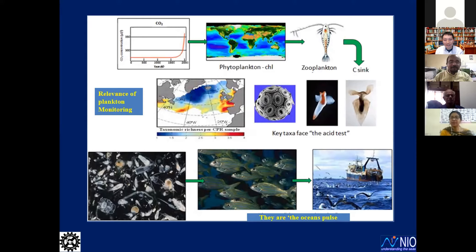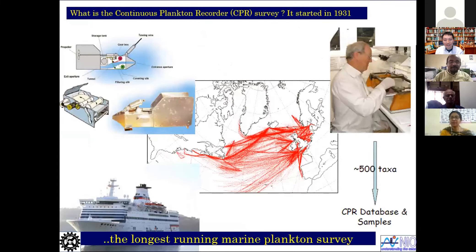Just as when you visit a good doctor, he will first check your pulse because it gives clear indications of your health status — plankton works the same way. If you have a very good long-term understanding of plankton components, you will get clear indications of which direction that ecosystem is drifting or moving. So how do we tackle this issue and understand climate change in terms of plankton?